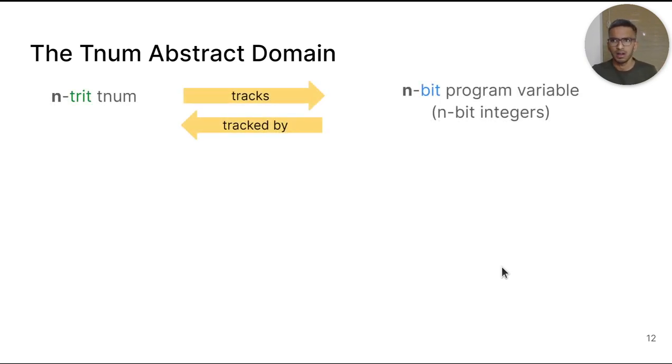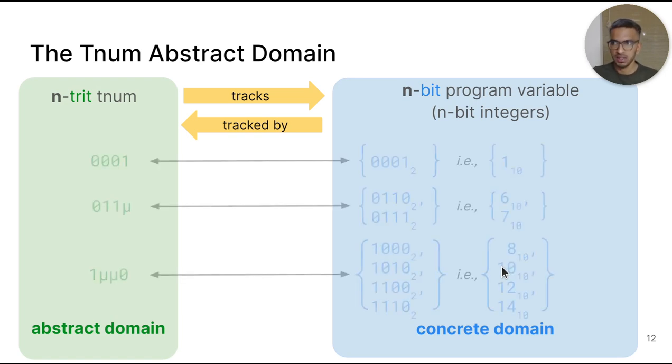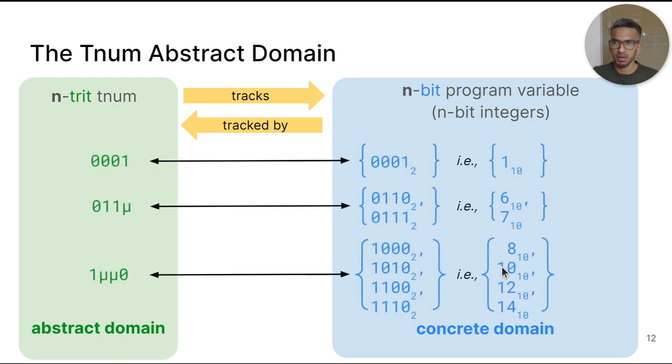But first, let's start with an introduction to the TNUM abstract domain. To recall, a digit in a TNUM can take one of three values. We call such a digit a TRIT for ternary digit. An N-TRIT TNUM tracks an N-bit program variable. We call the domain of all TNUMs the abstract domain and the domain of all N-bit program variables integers the concrete domain.